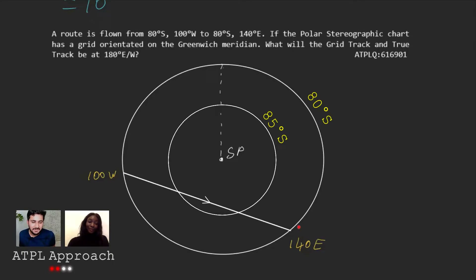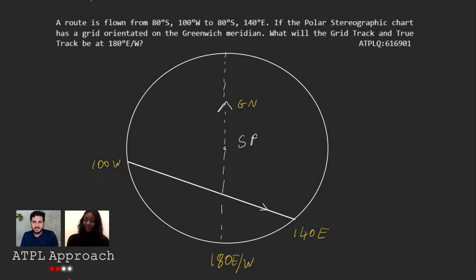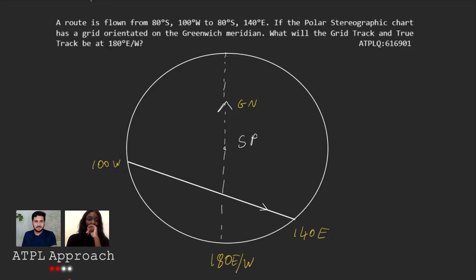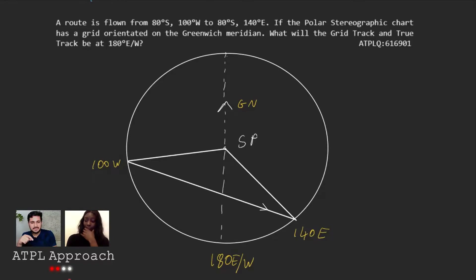85 is halfway between 80 and 90 so it'll be halfway there. And as you can see, when we're going from 100 west to 140 east we're actually going to start going more south, more south, more south, and then start going north, north, north again. So with this it's saying: if the polar stereographic chart has grid oriented on Greenwich Meridian, what will the grid track and true track be at 180 degrees east/west? Let's start with the grid track. The good thing about grid track is it doesn't change, so you can work it out anywhere. Maybe think about properties of this diagram — the fact that we know the distance between the south pole and the edge of the circle is going to be the same because it's a circle, and it's 80 south all the way around. So that tells us that this line and this line are equal.